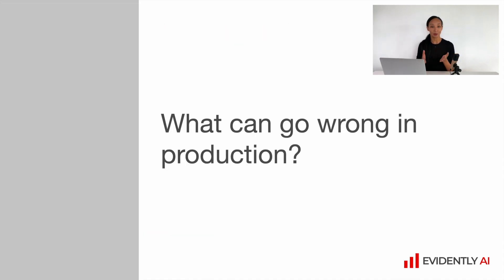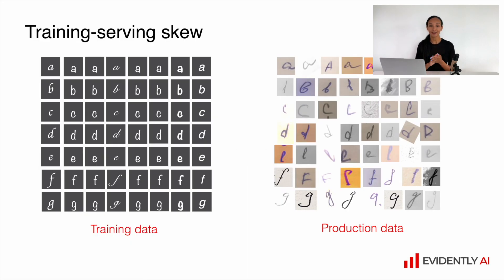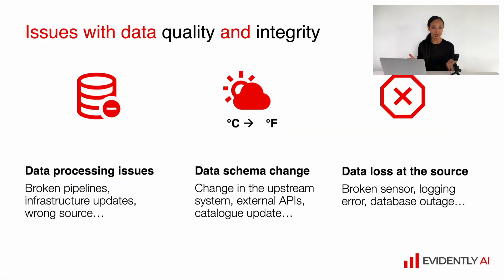Now let's discuss what can go wrong in production. Quite a lot of different things, and I would start from training-serving skew. If the data you used during experiments and training is quite different compared to production data, your model's quality can degrade. But in most cases when something is wrong with the model, it's because the input data is wrong, and there are quite a lot of things which can happen with the input data.